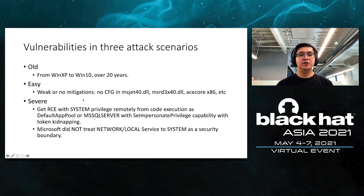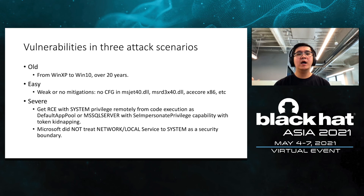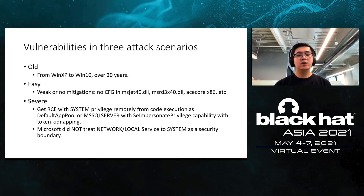A short summary for vulnerabilities in three attack scenarios: they are very old — over 20 years old — and they work from Windows XP to Windows 10. For example, there is no CFG at all in MSJET 4.0 components. The damage is severe since a successful exploitation can execute any code in IIS and SQL Server processes. Since IIS and SQL Server have SE Impersonate privilege capability enabled by default, it's easy to use token kidnapping techniques to escalate the privilege to SYSTEM. So it is possible to go from a SQL injection to a remote SYSTEM.